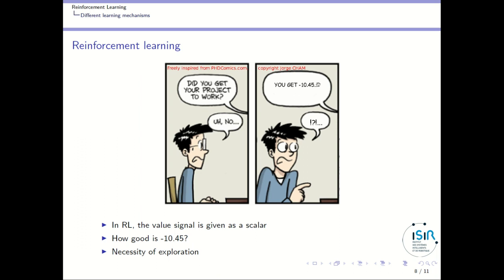So if you just get a scalar value, you will have to try different things to figure out what was the best answer finally. And that's the key difference between supervised learning and reinforcement learning. In reinforcement learning, you need to explore, you need to try different things to figure out what's the correct answer. But there is a difficulty behind exploration.